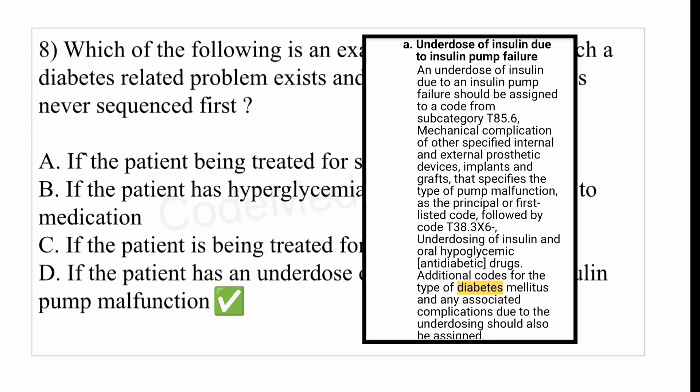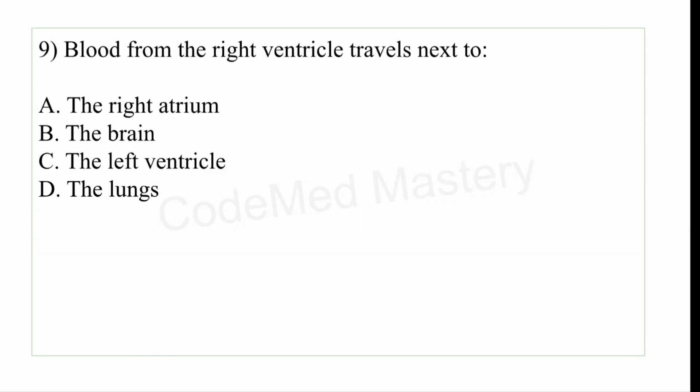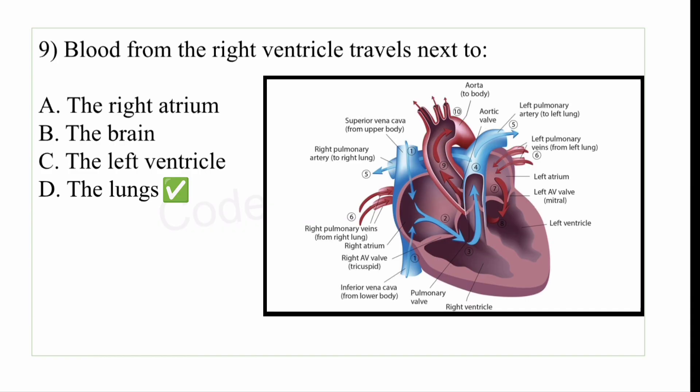Next question: blood from the right ventricle travels next to — option A: right atrium, option B: the brain, option C: the left ventricle, option D: the lungs. The right answer is option D, the lungs. In the CPC exam, if you get confused or want to confirm your answer, you can check the anatomical illustration in your ICD manual. The diagram shows that blood flows from the right ventricle to the lungs through the pulmonary artery.